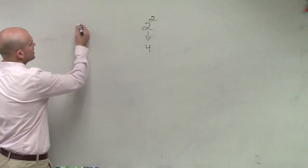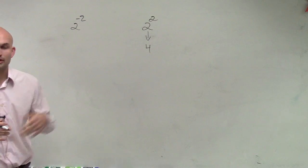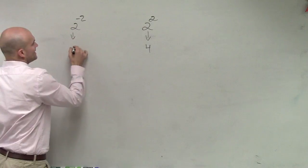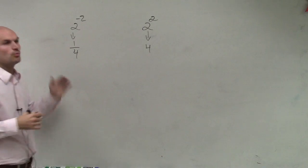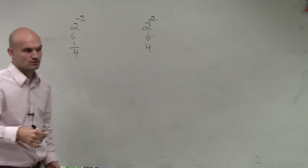Then we started talking about negative integers. Remember, negative integers is when you're going to put that down to the denominator. So that equaled 1 fourth, because it's 1 over 2 squared.